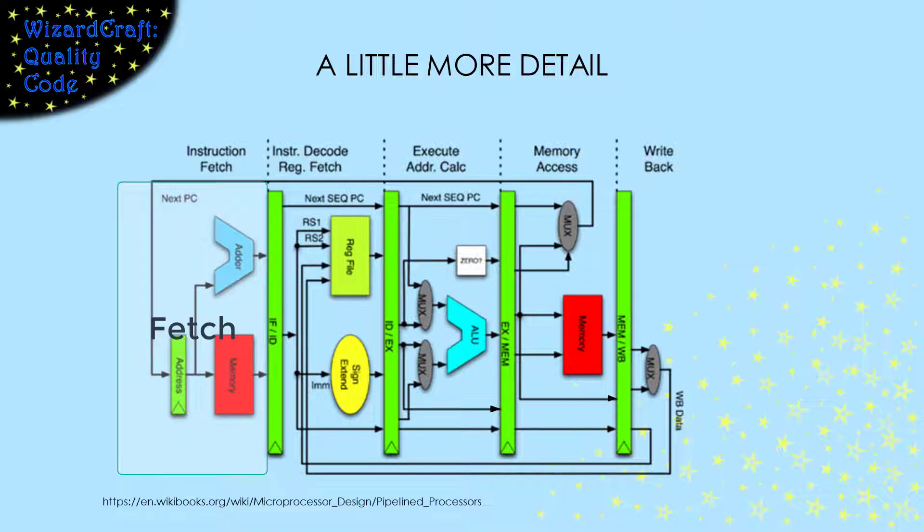The Fetch part uses the address in the PC to fetch the instruction from memory. While that's happening, it's also adding to the PC so that the PC will contain the address of the next instruction. The instruction decode part is kind of hidden in this green box. It tells the registers which ones will be used, and it'll figure out what operation the ALU should do when the instruction gets to the execute phase.